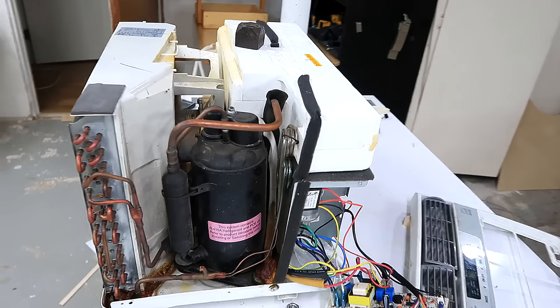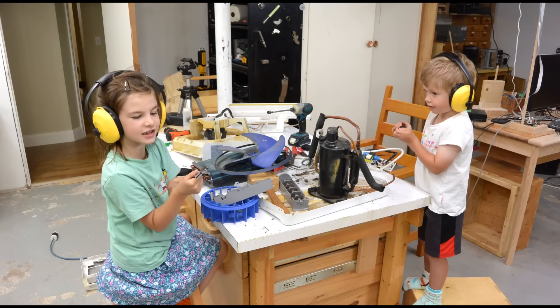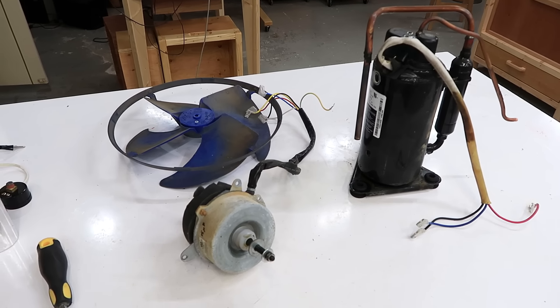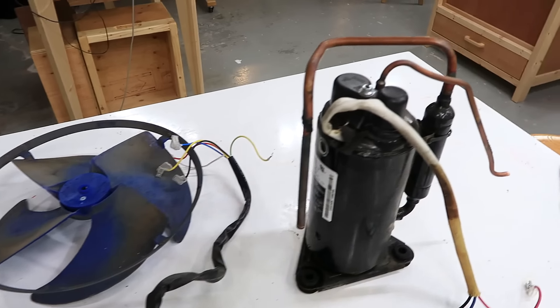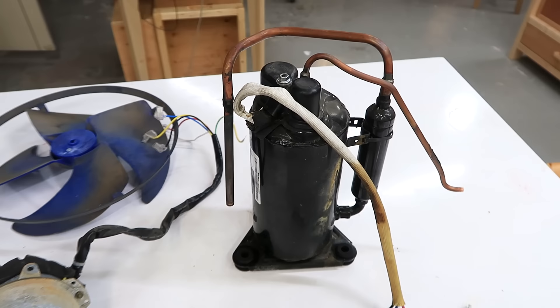I picked up this window AC from the curb figuring I could fix it. The motor still ran but it wouldn't cool, so there's probably no refrigerant left in it. I took it apart with the kids, they always enjoy that sort of thing. The pieces I'm keeping are the fan motor and the compressor, and this is what I want to try out in this video.